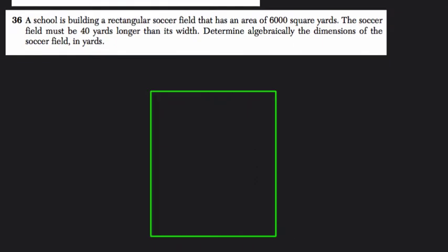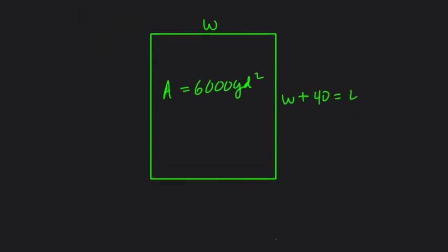So, okay. Again, the area is 6,000 square yards, and the field must be 40 yards longer than its width. So we want to know the dimensions, right? If the width is W, that means the length L is just W plus 40. It's 40 yards longer, and that equals L. So here we want to know what those dimensions are.